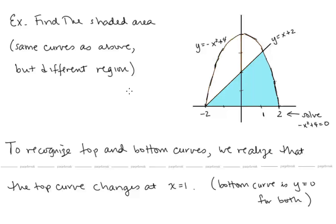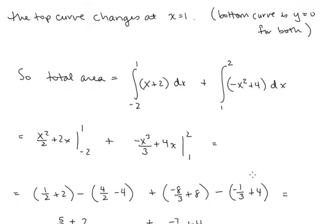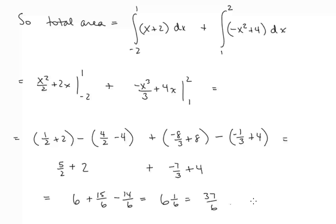Now let's find the shaded area for a different region using the same curves — y equals negative x squared plus 4 and y equals x plus 2. For this region, the top curve changes at x equals 1, so we split into two integrals. From negative 2 to 1, the top curve is y equals x plus 2 and the bottom is y equals 0. From 1 to 2, the top curve is y equals negative x squared plus 4 and the bottom is y equals 0. Integrating and combining, we get 37 sixths.